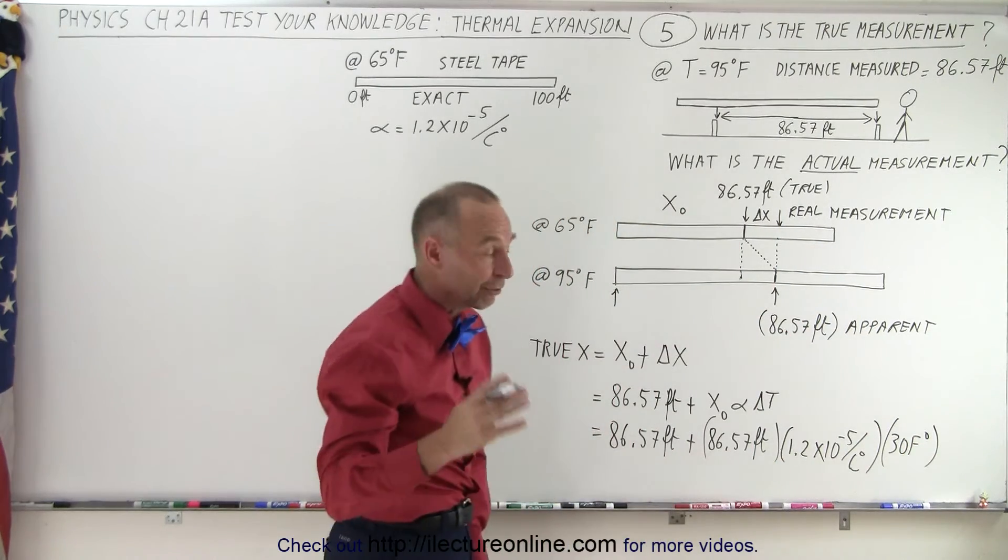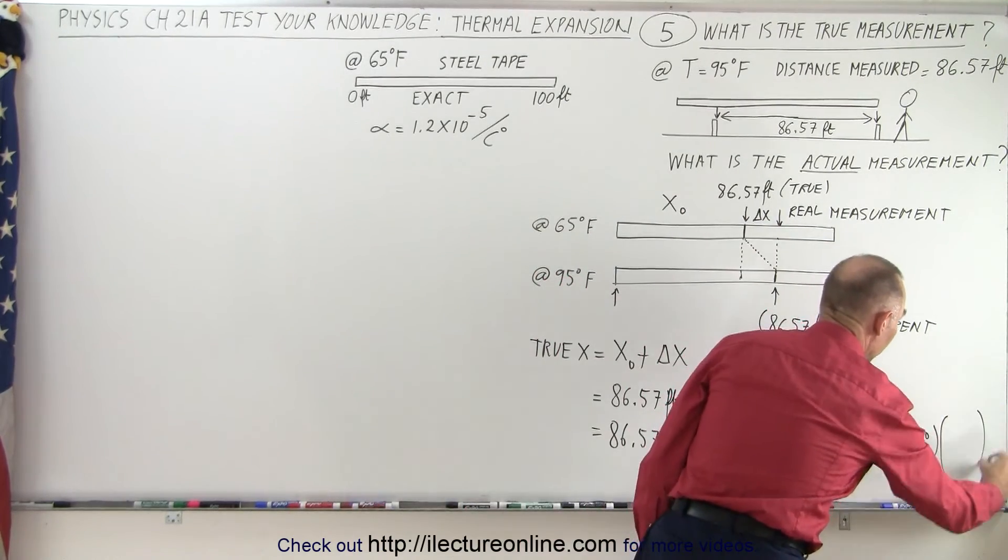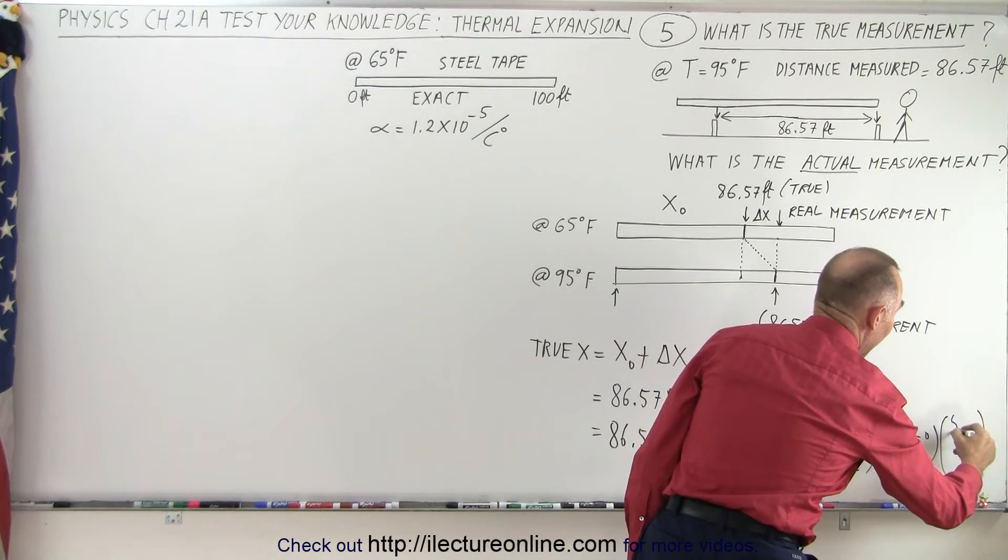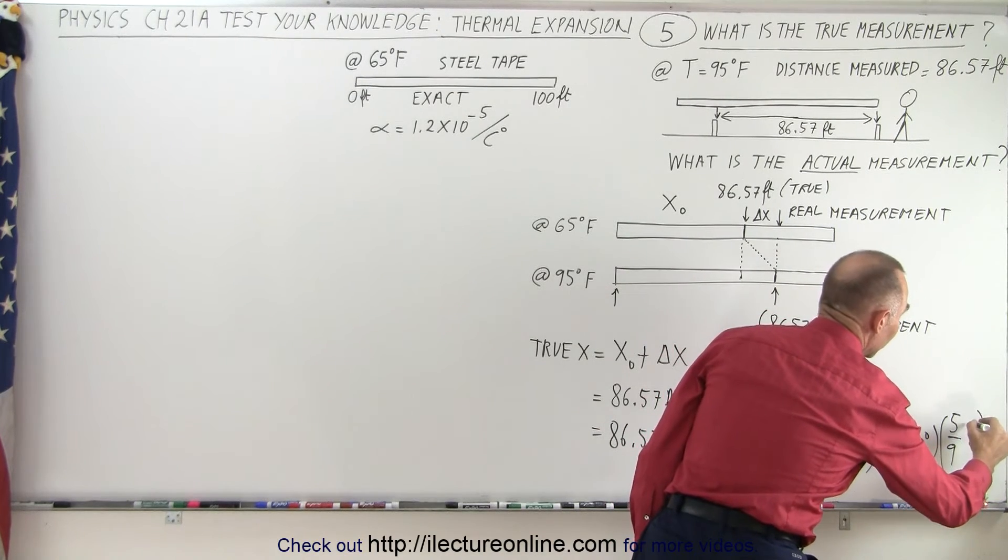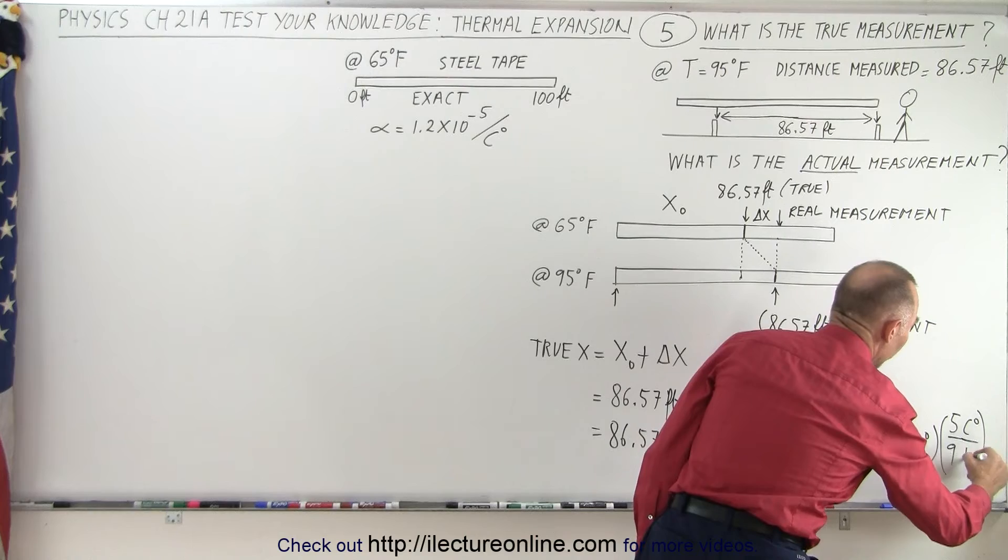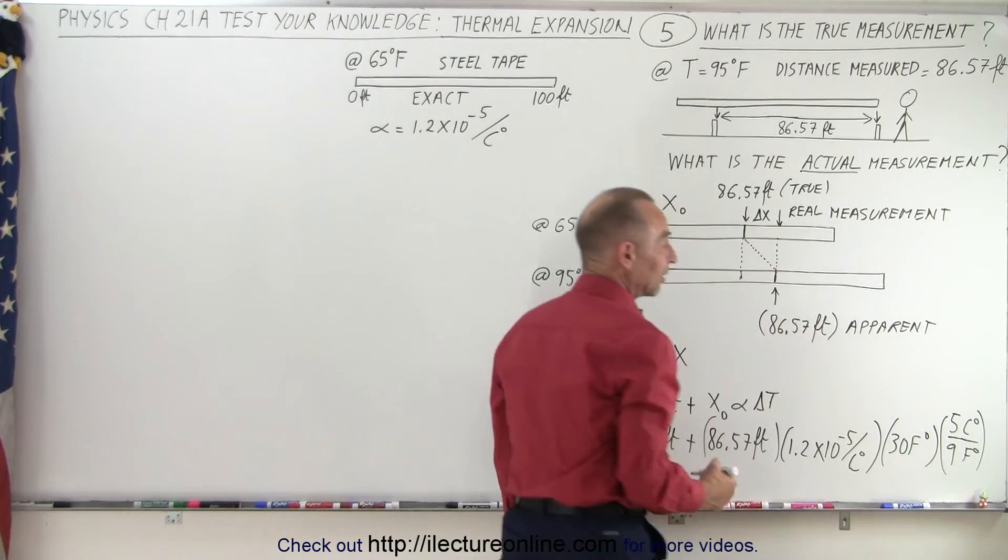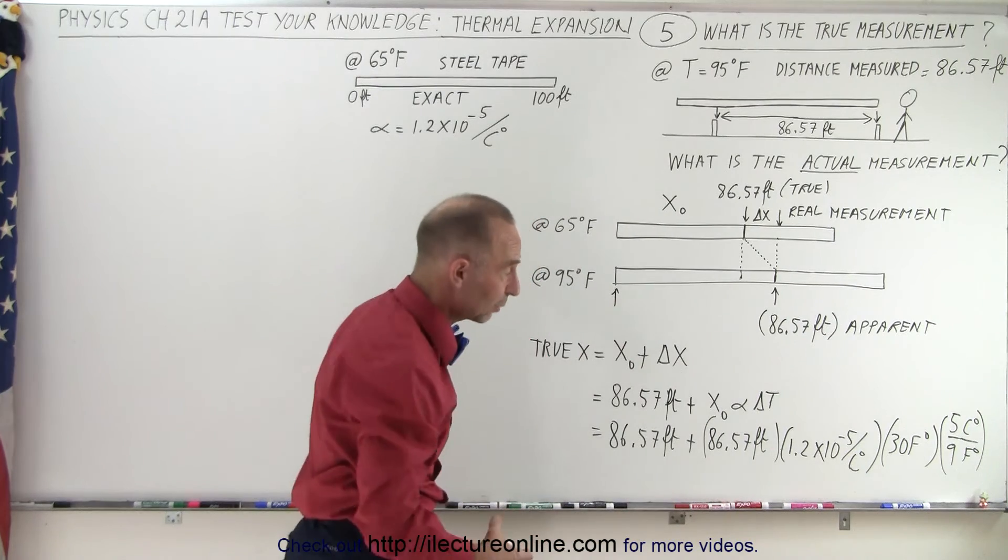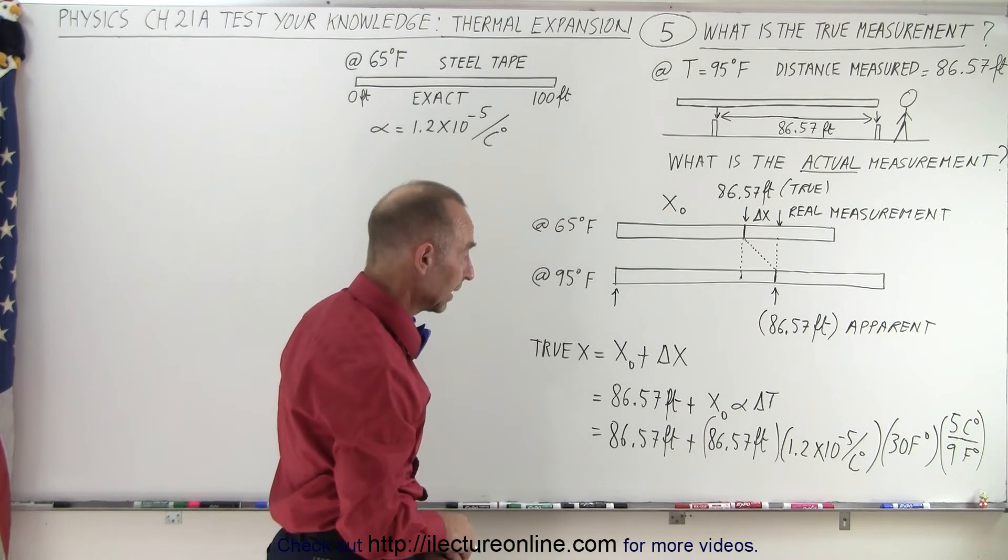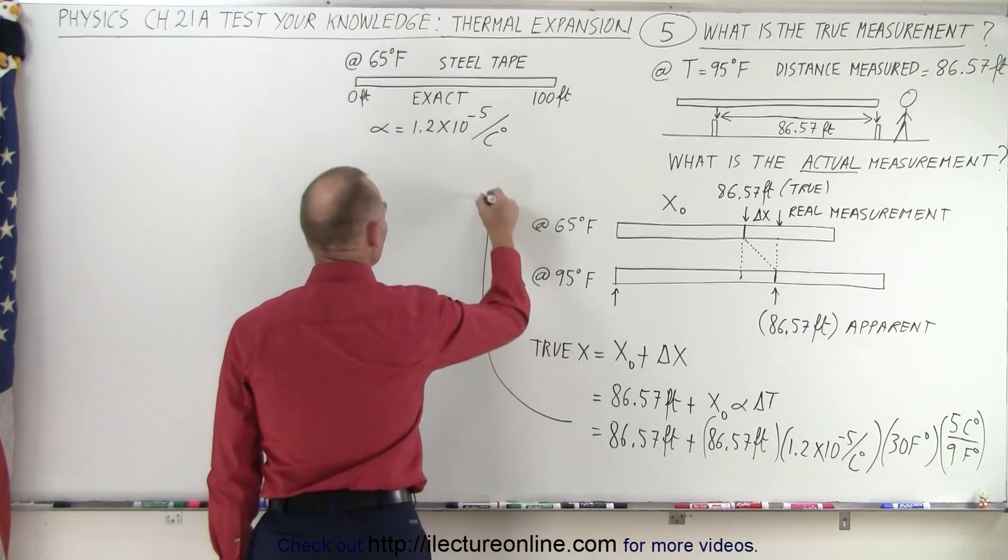But then you have to convert that to centigrade degrees, and the ratio is 5 over 9 centigrade degrees to Fahrenheit degrees. So the Fahrenheit degrees cancel out, and we're left with centigrade degrees. Now we can go ahead and calculate what that is.